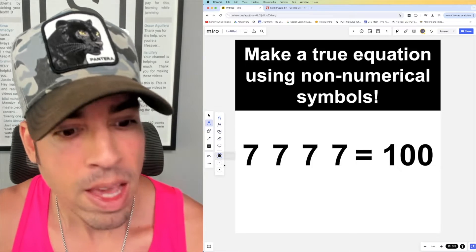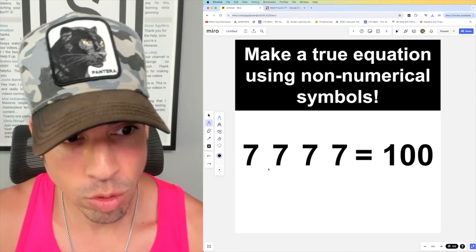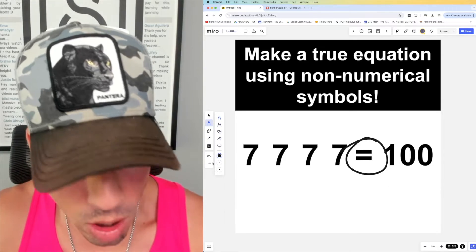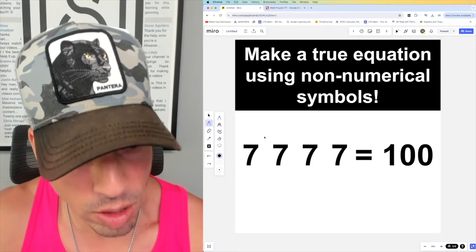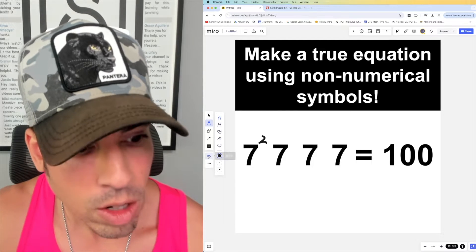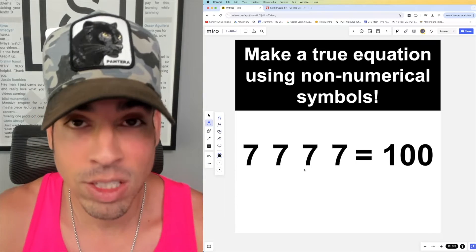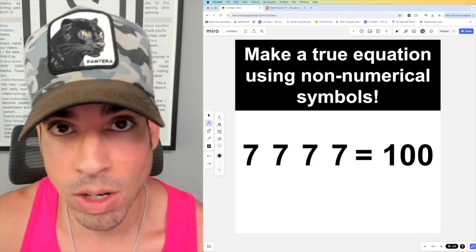...if I just make this not equal? Well, that's not going to be a viable solution. So we want a true equation, meaning we want that equal sign to be there. When we say non-numerical symbols, you can't do a square, you can't do a cube, no adding of any numbers, but just any symbols are fair game.